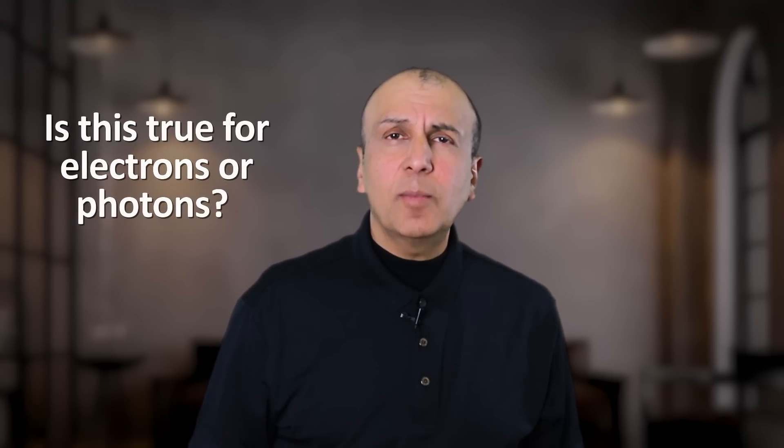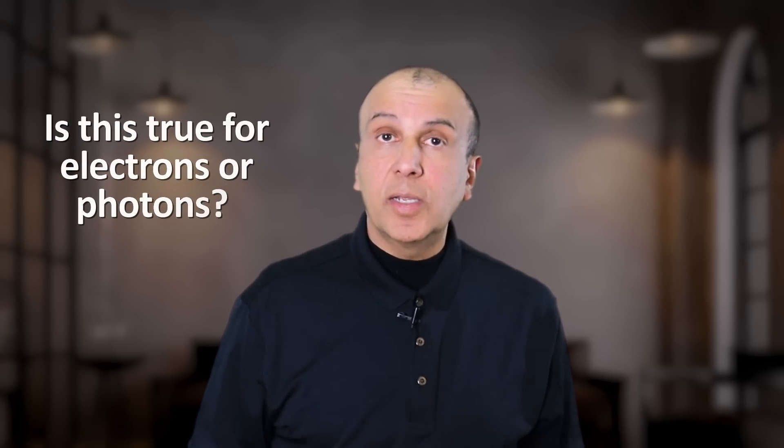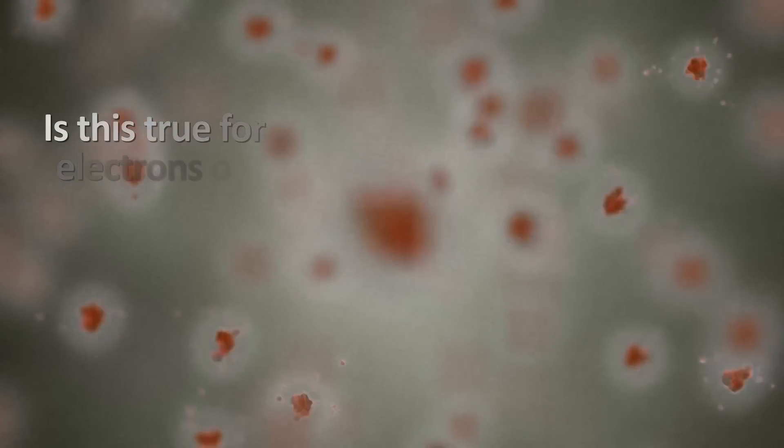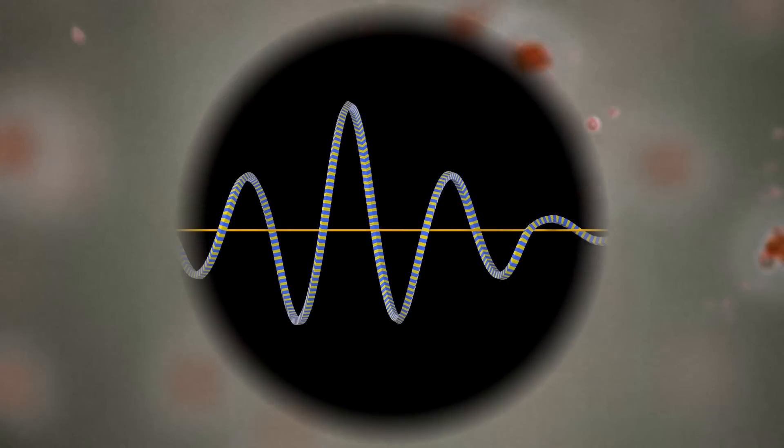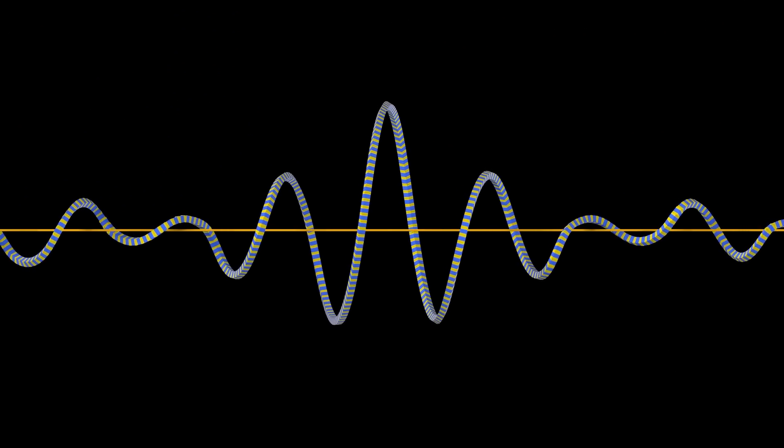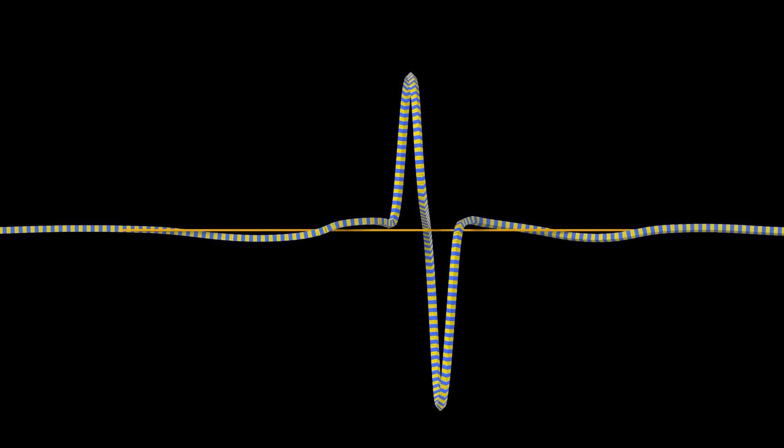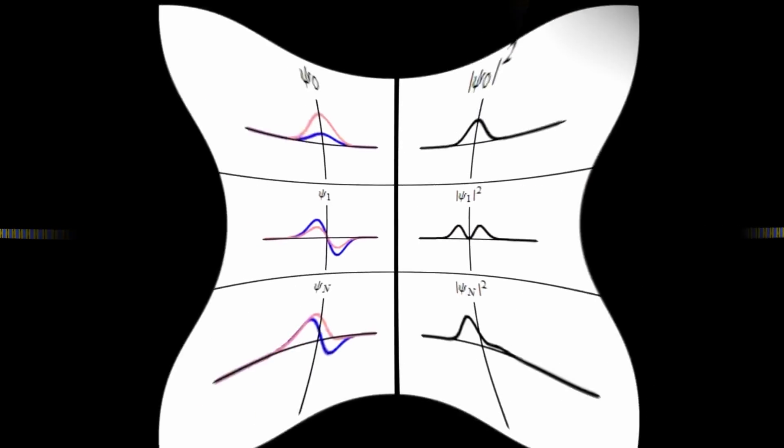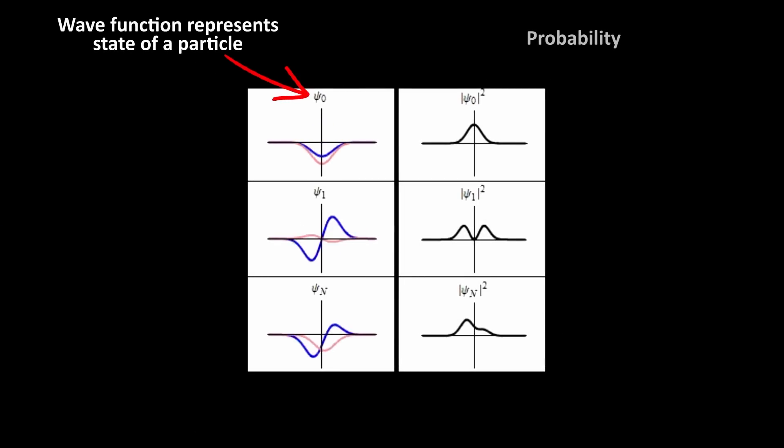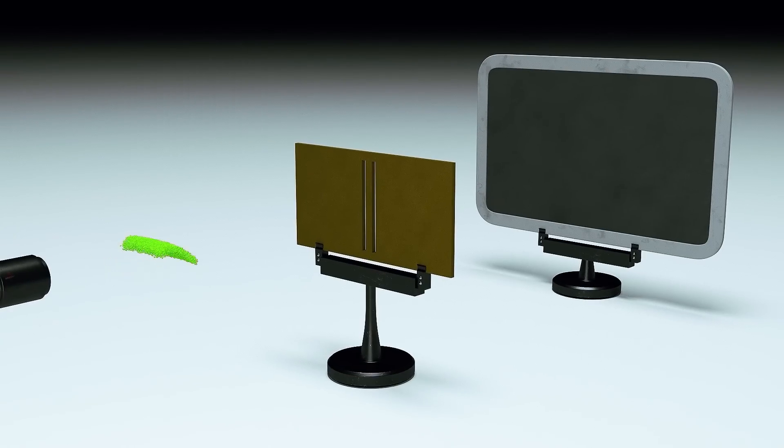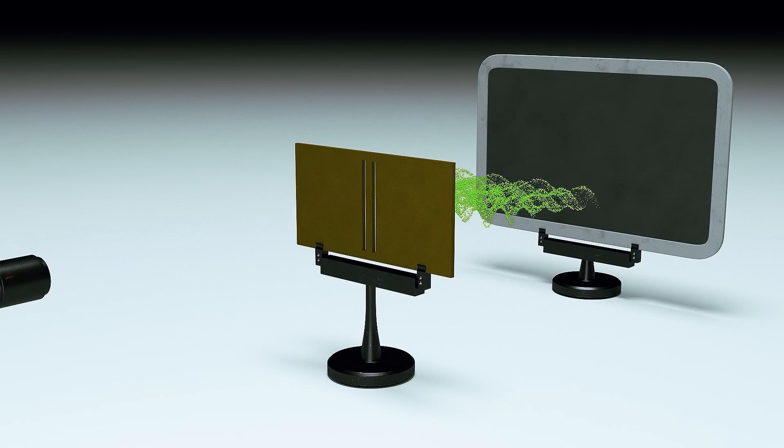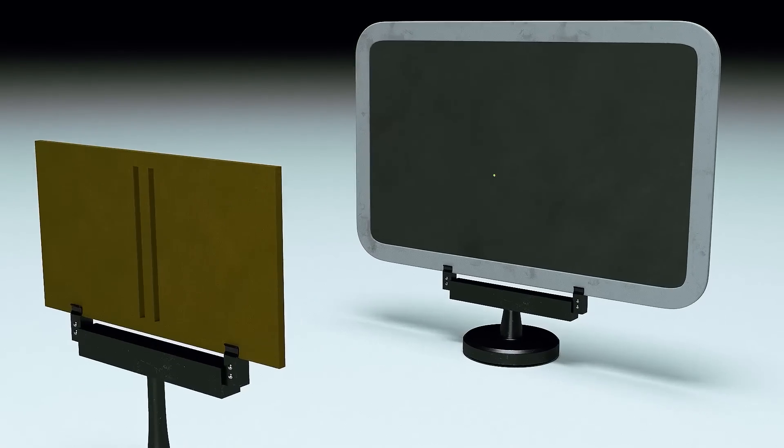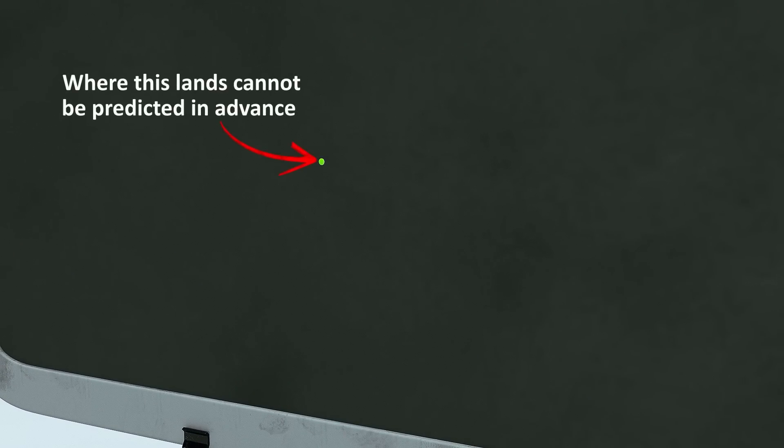But what happens if we apply the same logic to an electron or photon? Can we calculate with certainty where we would find them? According to the most accepted interpretation of quantum mechanics, the answer is no, because its location is described by a wave function. And this wave function can only tell us the probability of a certain result. So the location we would measure would be probabilistic, not deterministic. There seems to be an innate uncertainty inherent in quantum mechanics.